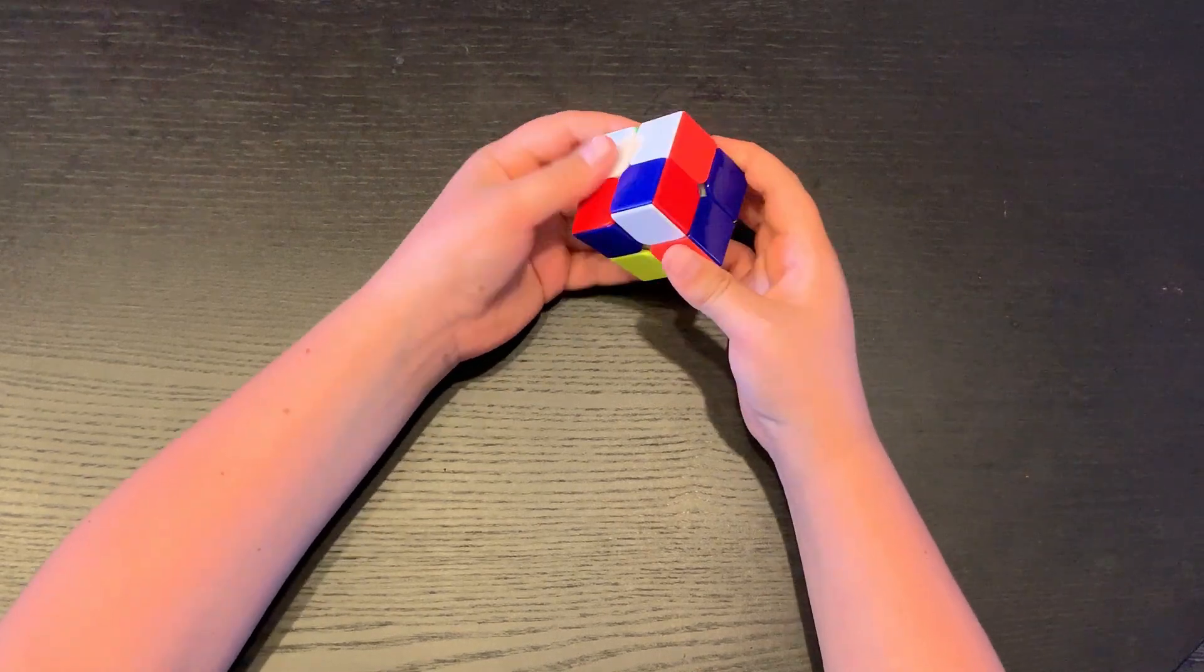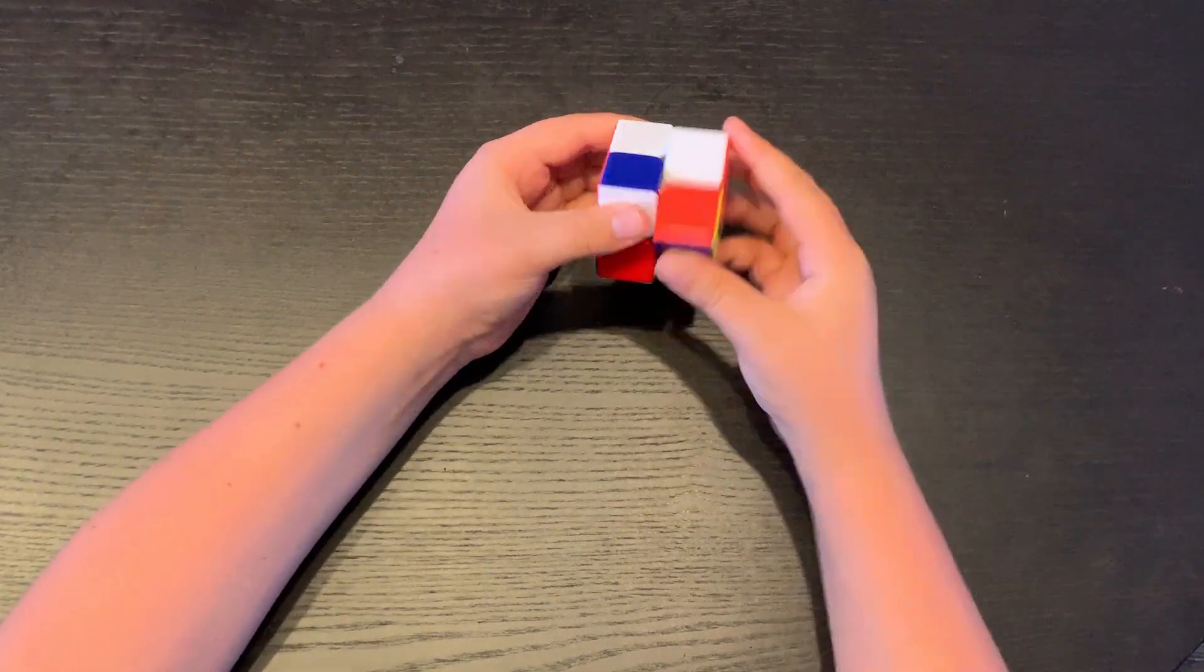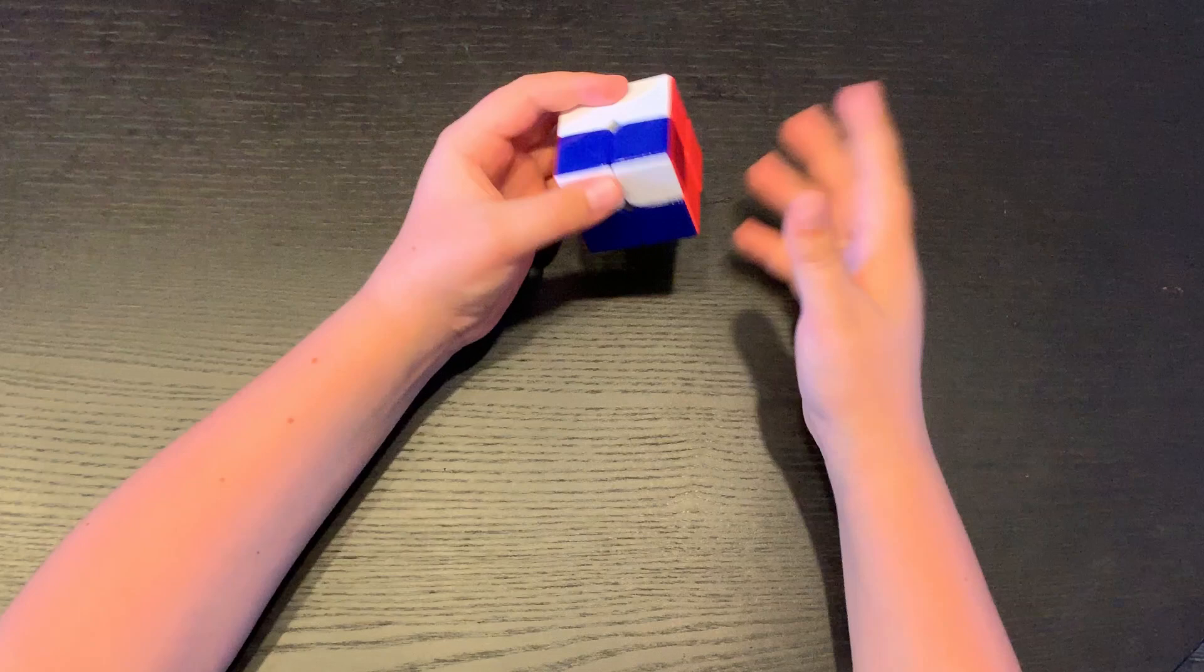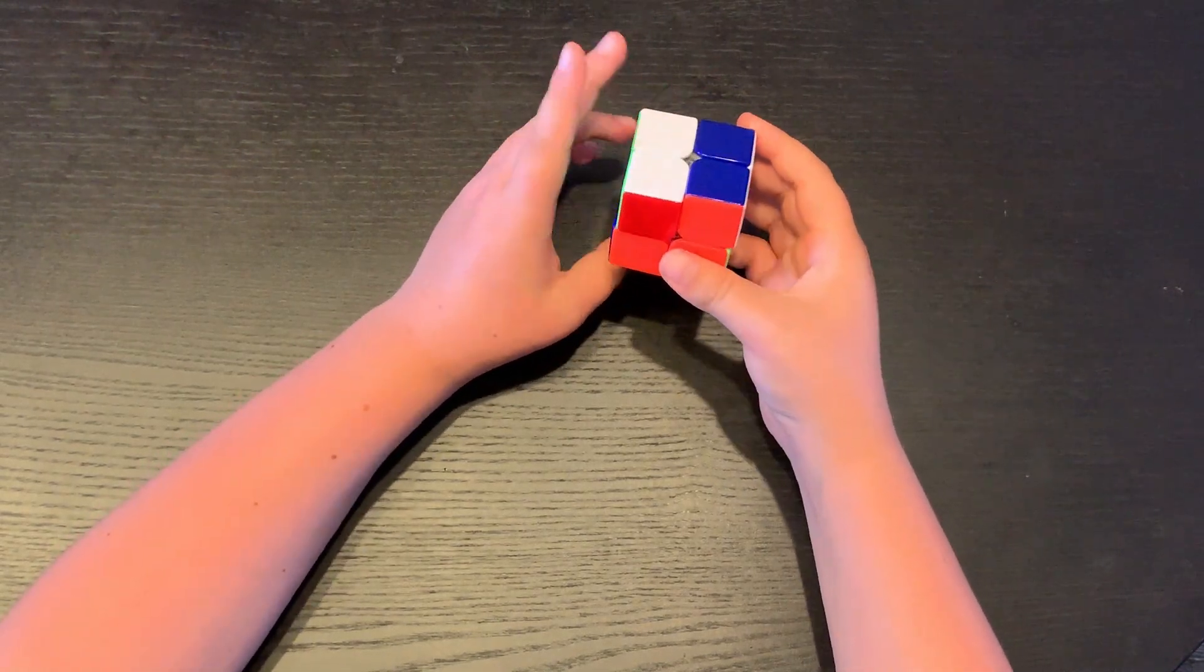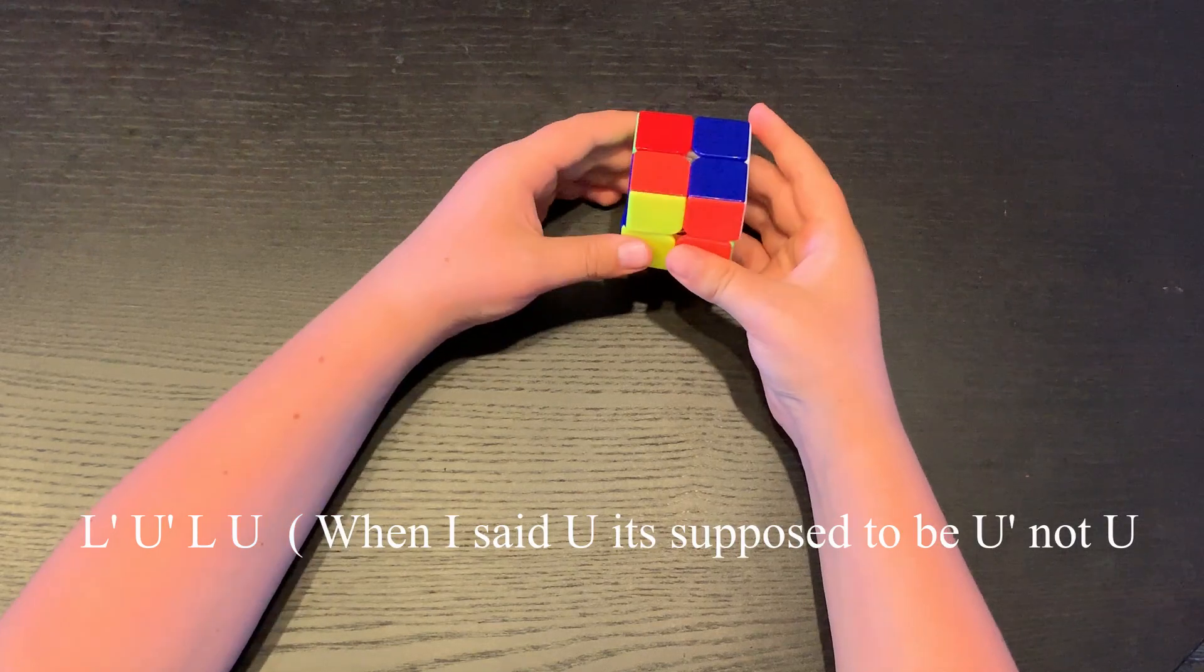But we won't be doing that old retro flipping corner flipping algorithm. We're going to be doing the same thing, except now we have it on the left side. So if you have on the left side, do L' U L U'.